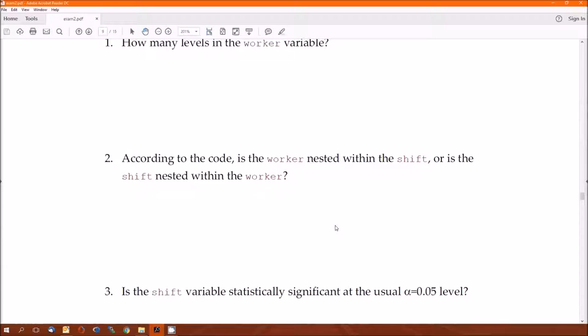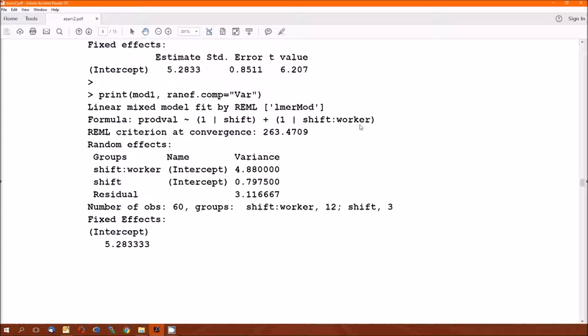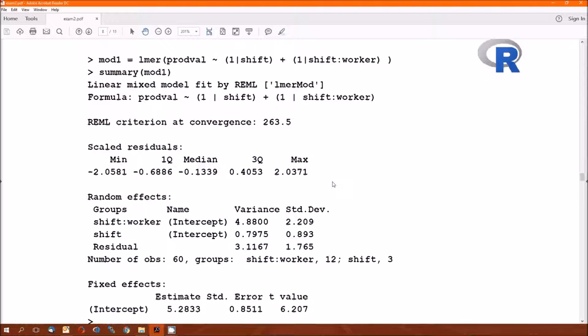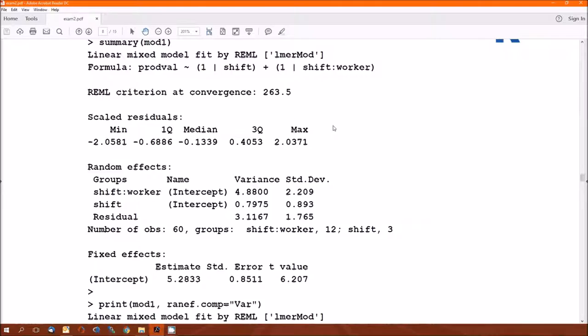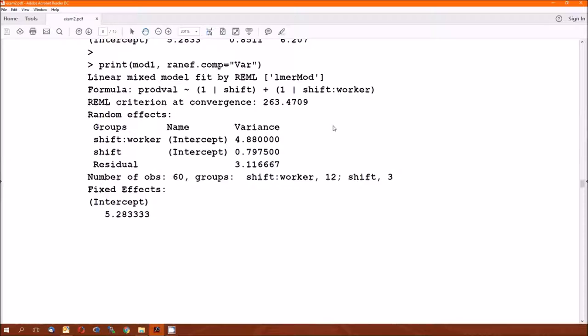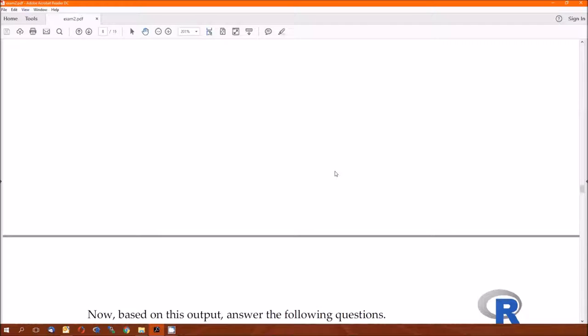Two: according to the code, is the worker nested within the shift or the shift nested within the worker? I know in the book worker was nested within shift, but what about in this particular code? Is that worker still nested within shift? We know that here. We also know because shift is included here instead of worker. Now a quirk of R is shift colon worker really doesn't mean worker within shift because it also could be calculated as shift within worker. But including shift here makes it worker within shift because that colon actually just means times.